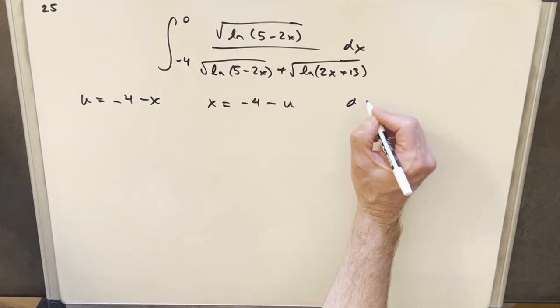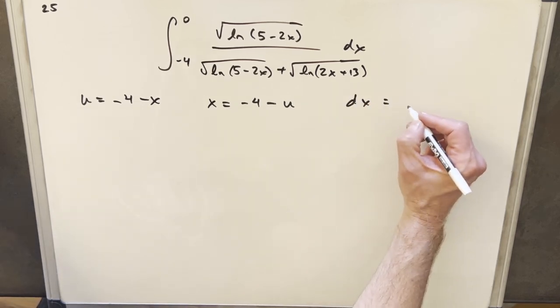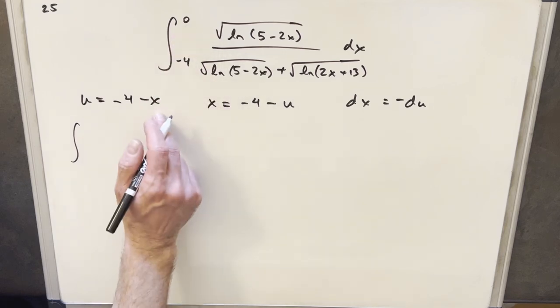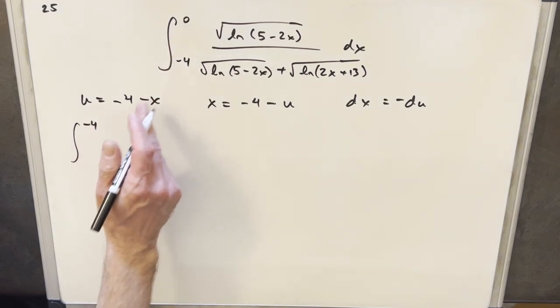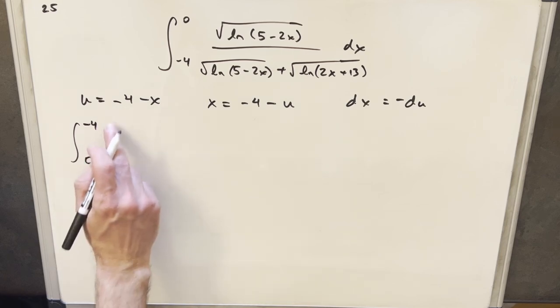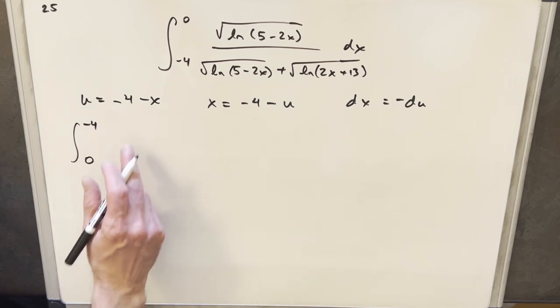We'll just take our derivative. So for dx, we're going to have dx is equal to minus du. Then we'll make our substitution. And what you'll notice, when we plug the 0 in here, we have minus 4. And when we plug a minus 4 in, we get 0. So whenever we do this, we always get this type of, we flip the bounds.